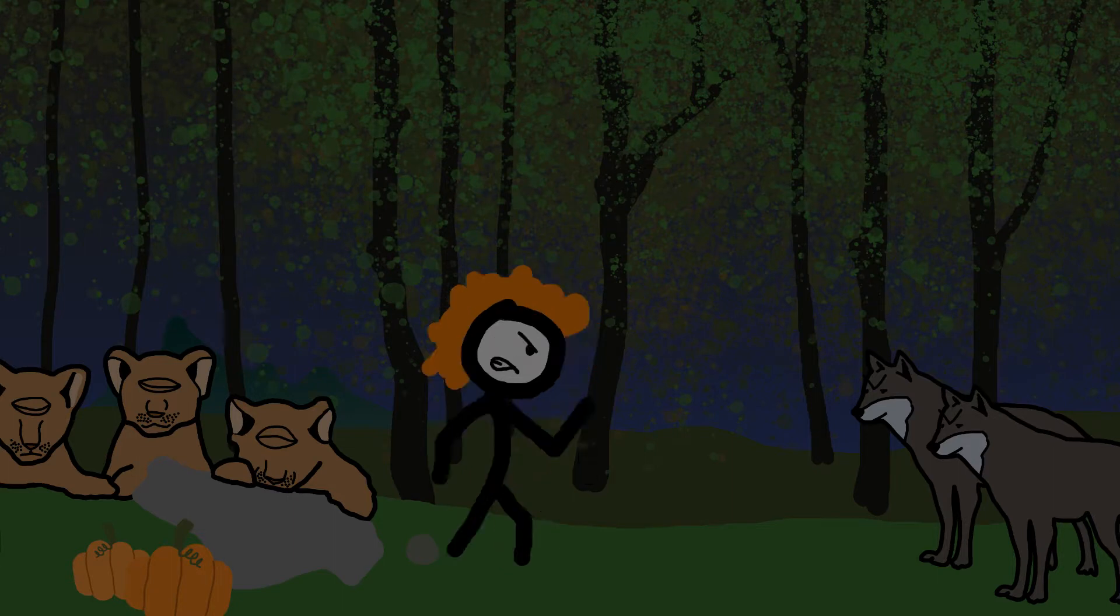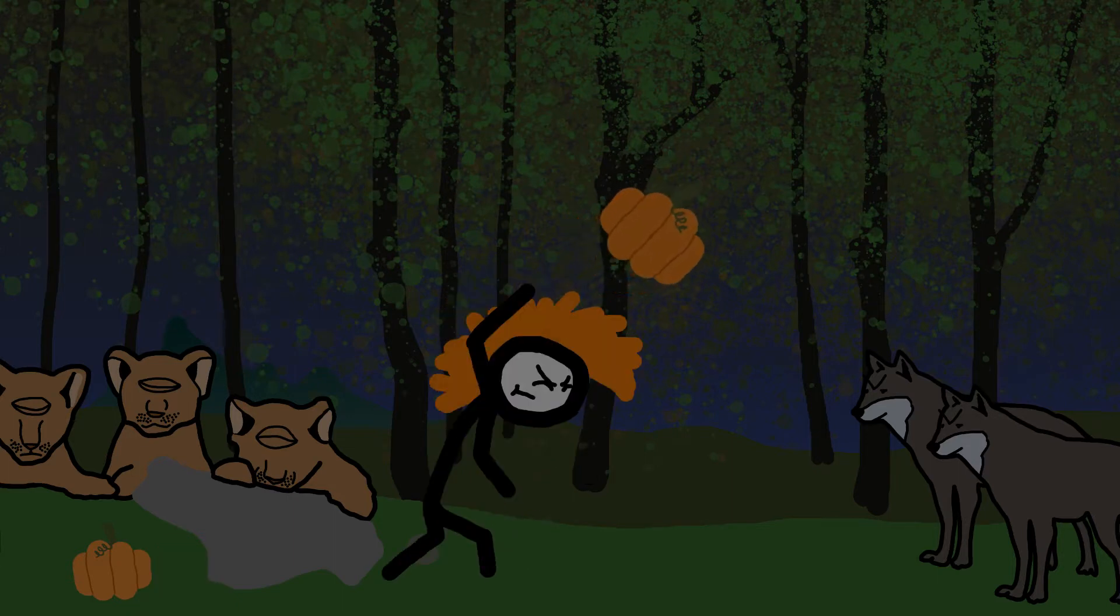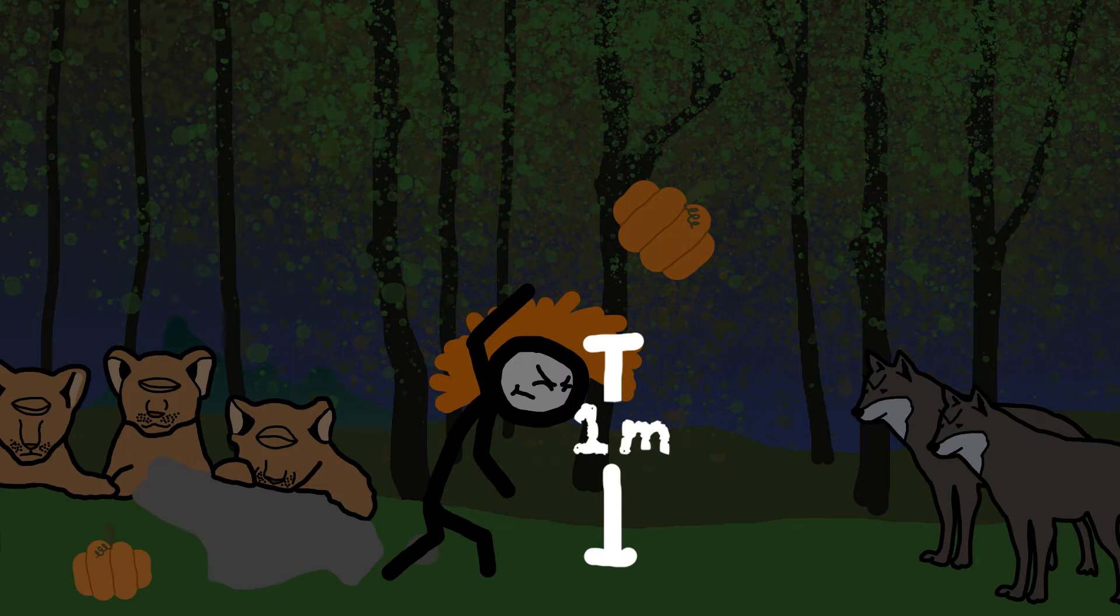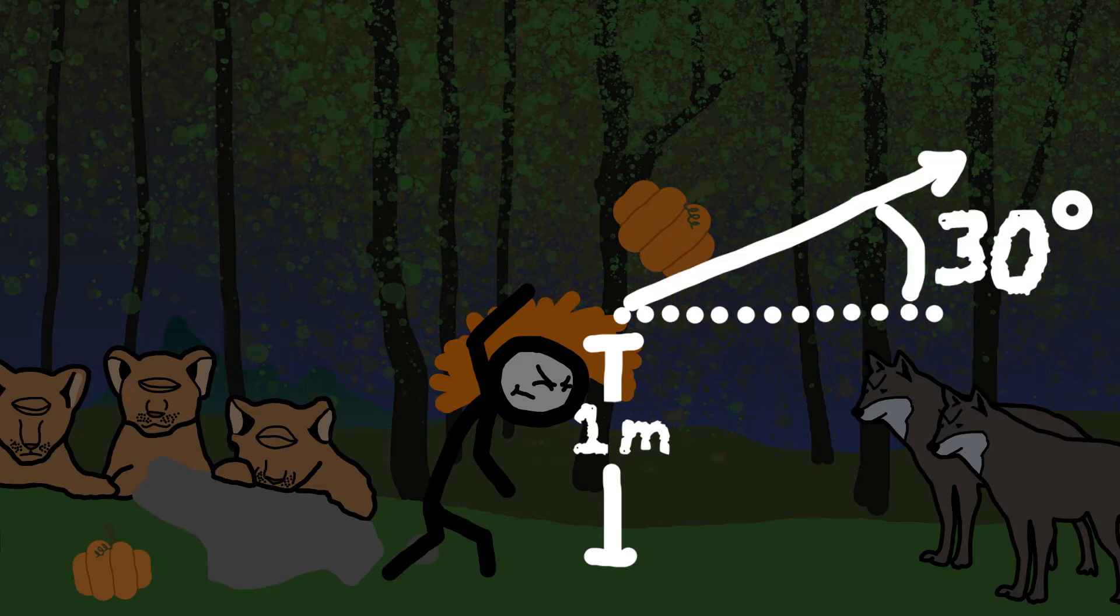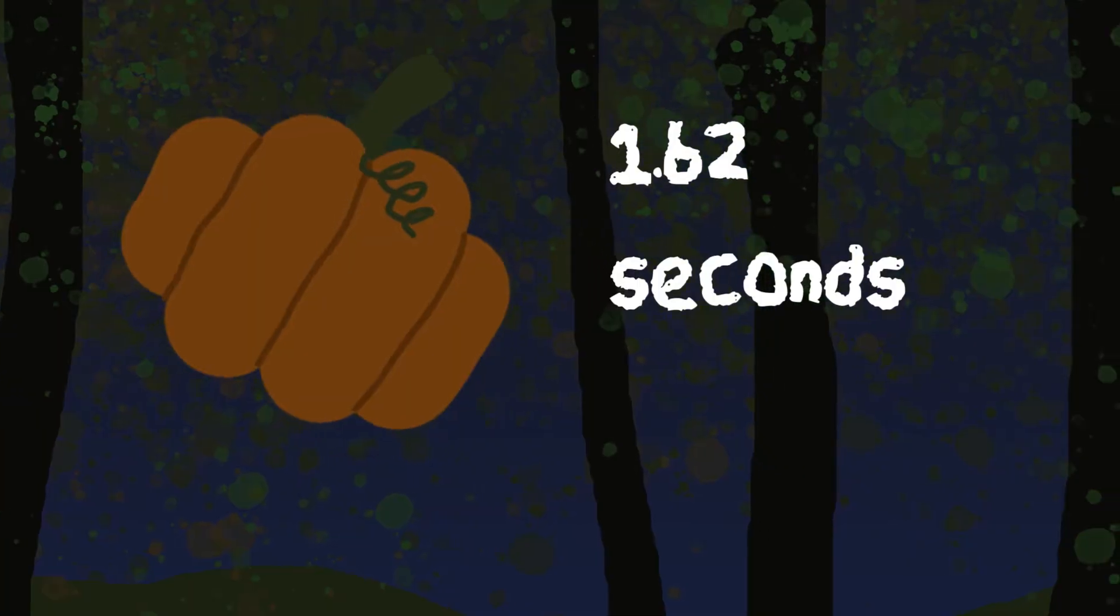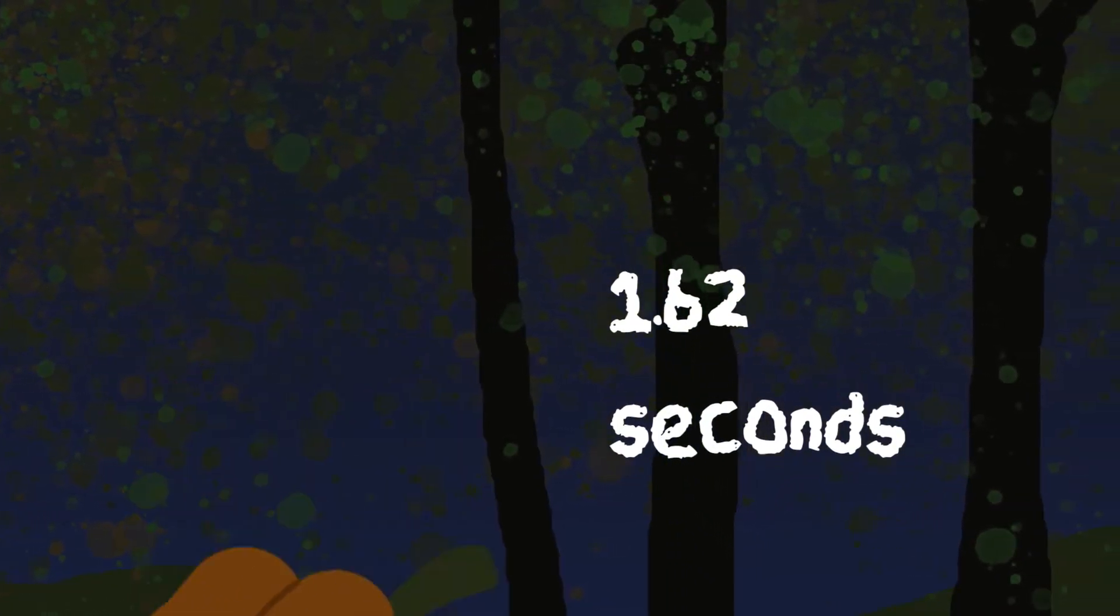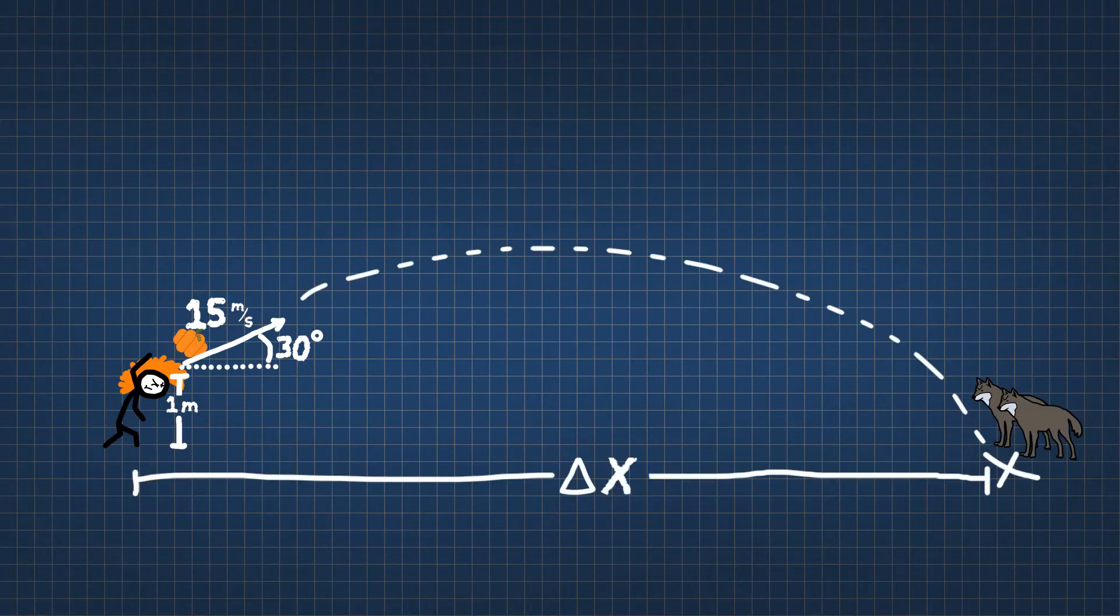To get rid of the wolves, Rolina throws a pumpkin one meter from the ground at an angle of 30 degrees with a velocity of 15 meters per second. The pumpkin takes 1.62 seconds to hit the ground. Calculate the displacement x, the speed at the maximum height, and the speed when the pumpkin hits the ground.